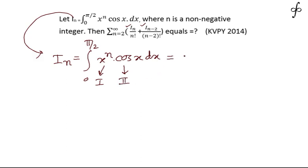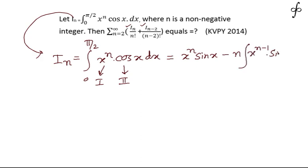This gives rise to the result: x to the power n times sin x minus n times the integral of x to the power (n-1) times sin x dx.